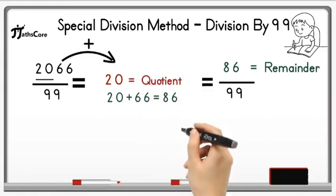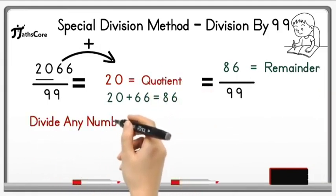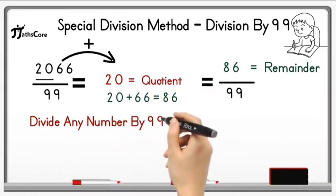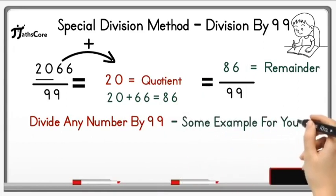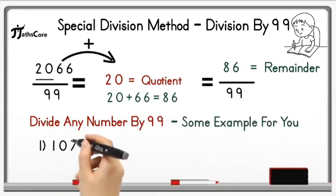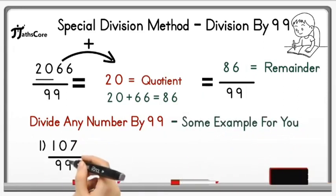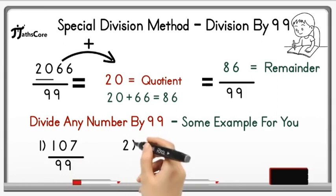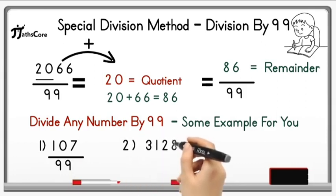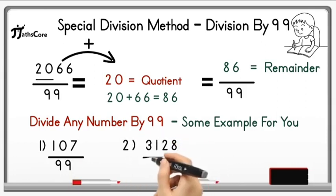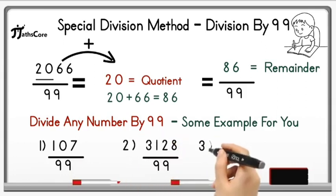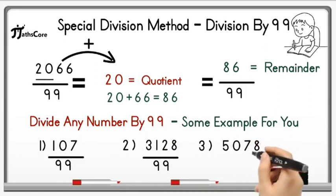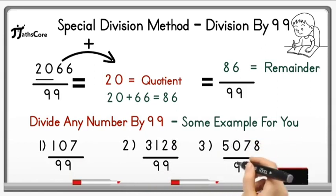In this way you can divide any number by 99. Here are some practice examples for you: the first one is 107 divided by 99, the second one is 3128 divided by 99, and the third is 5078 divided by 99. You can solve these examples using this technique.